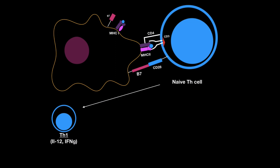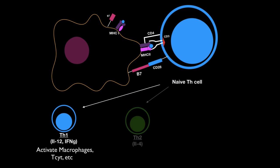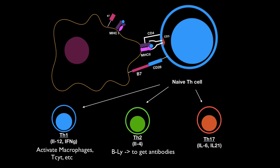T-helper cell 1 is mostly for inflammation, like activating macrophages or other cytotoxic T-cells. If it receives interleukin-4, it mainly differentiates into T-helper cell 2, which mainly activates B-lymphocytes. Or if it receives interleukin-6 or interleukin-21, it's going to become T-helper cell 17, which is very specialized in parasitic infection.